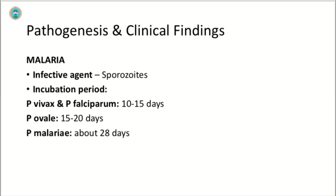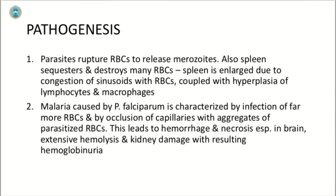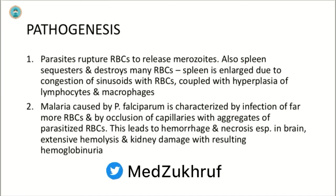The infective agent for malaria is sporozoites. Incubation periods vary: for P. vivax and P. falciparum it is about 10–15 days; for P. ovale about 15–20 days; and for P. malariae about 28 days. Most pathologic findings result from destruction of red blood cells, both by the release of merozoites and by the spleen sequestering and lysing infected RBCs. The enlarged spleen characteristic of malaria is due to congestion of sinusoids with erythrocytes coupled with hyperplasia of lymphocytes and macrophages.